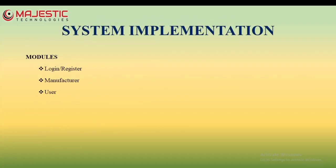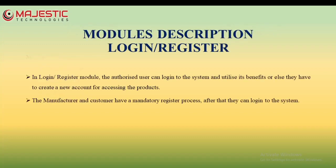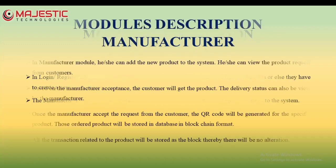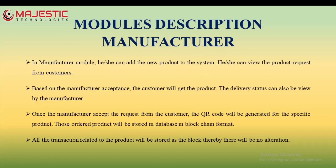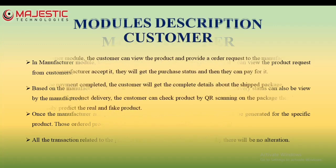The system consists of the following modules: login or registration, manufacturer, and user. New manufacturers or customers have a mandatory registration process. In the manufacturer module, they can add a new product and view product requests from customers. Once the request is accepted, a QR code will be generated.